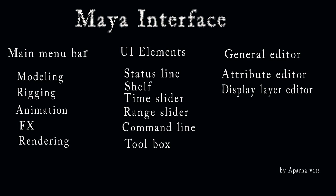Shortcut keys in Maya: 1 is Rough mode, 3 is Smooth mode, 4 is Wireframe, 5 is Display, 6 is Texturing, 7 is Lighting. C is Snap to Curve, X is Snap to Grid, V is Snap to Point, F8 is Component mode, F9 is Vertex, F10 is Edge.